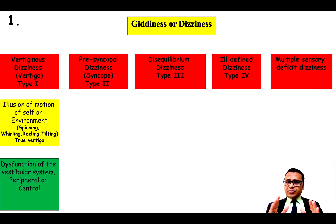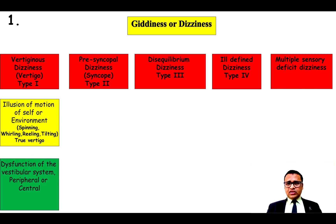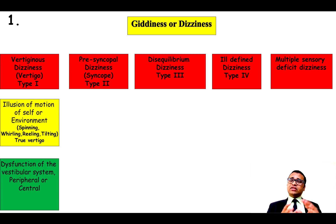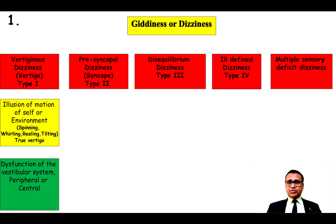Coming to localization: if a patient presents with this spinning type of dizziness or vertigo, there is a dysfunction either in the peripheral or the central vestibular system.